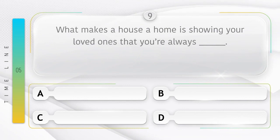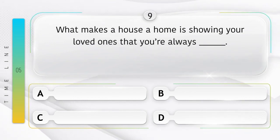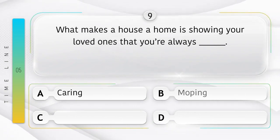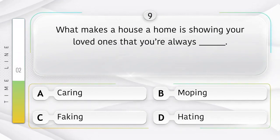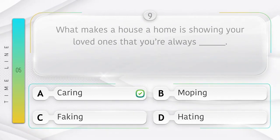What makes a house a home is showing your loved ones that you're always blank? Options are A. Caring, B. Moping, C. Faking, D. Hating. Answer is option A, Caring.